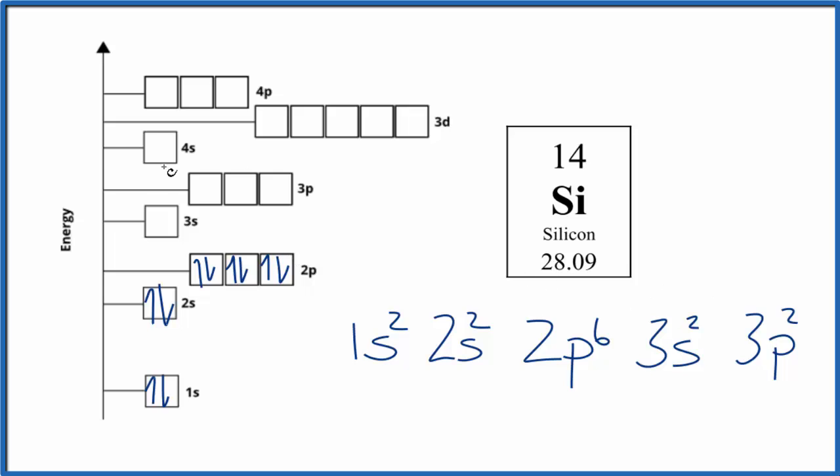We have 3s2, and then we end with 3p2. And again, we spread these out before we pair them. So this is the orbital diagram, the atomic orbital diagram for silicon.